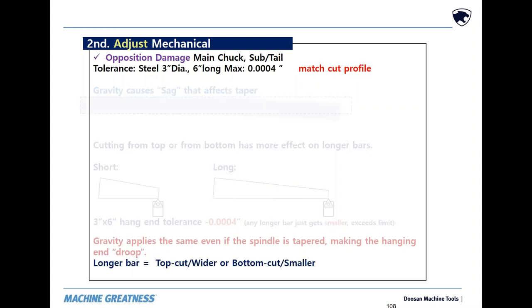On sagging bar, cutting from above leaves more material, while cutting from below takes away more material.